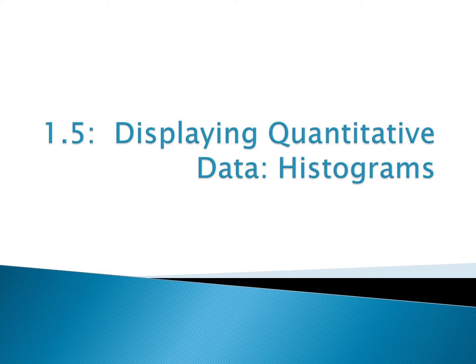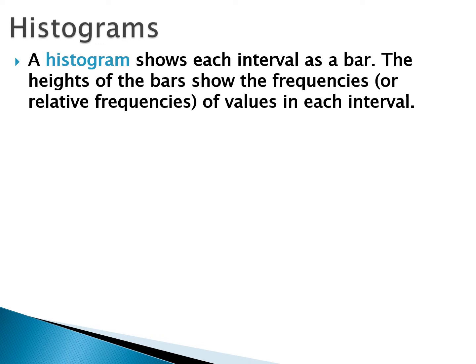Section 1.5: displaying quantitative data with histograms. A histogram is probably the most common graphical display in statistics. When we create a histogram, we take our data and separate it into intervals, then look at how much data falls in each interval and create a bar representing the frequency — the number or percentage, which is the relative frequency — of values that fall in that interval.